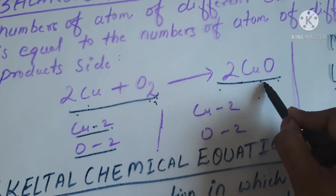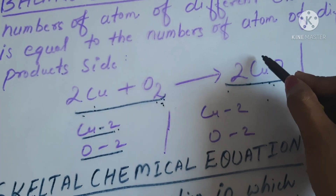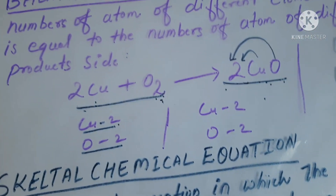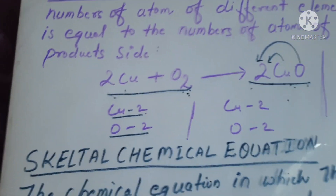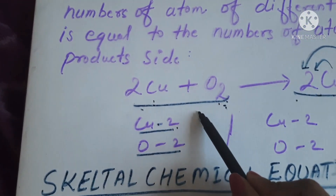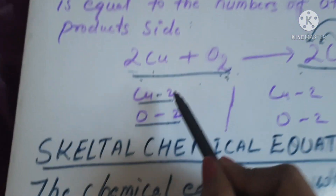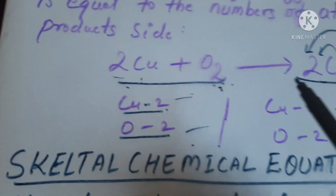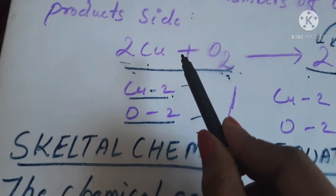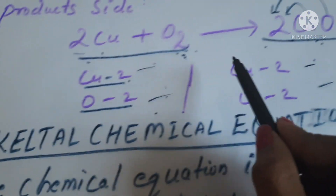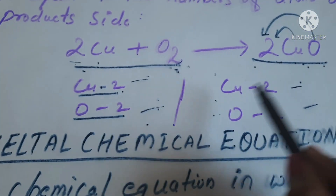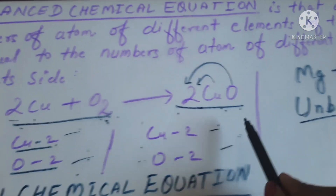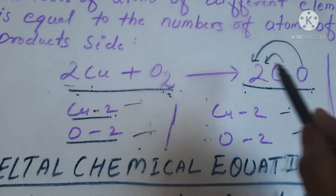Copper has two molecules and oxygen also contains two molecules. The number of atoms at the reactant side: copper 2 and oxygen 2, and in the product side, copper is also 2 and oxygen is also 2. So the number of atoms in the reactant side is equal to the number of atoms in the product side. Hence, it is a balanced chemical equation.